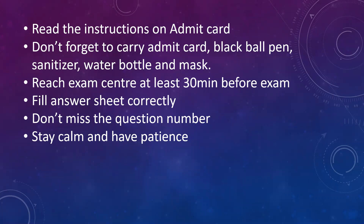Don't miss the question number. Since the exam is in offline mode, if you don't know the answer to question 10 but know the answer to question 11, make sure you leave the row for question 10 — otherwise you'll mark in the wrong row and the whole series will go wrong even if you know the correct answers. See the serial number correctly and stay calm. If you're not remembering anything, read the question twice — you'll likely recall the answer by seeing the options. If a question is very confusing, try the elimination method — eliminate options one by one to reach the appropriate answer. There is no negative marking, so don't leave any questions.